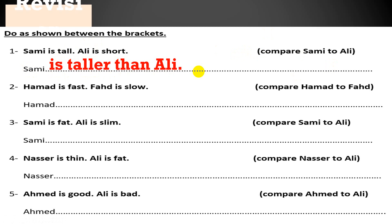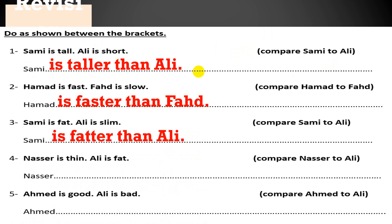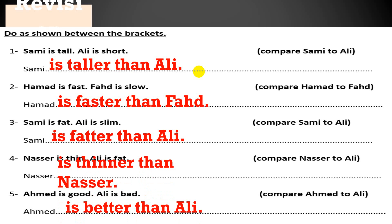Let's check: Hamad is fast, Fahid is slow — Hamad is faster than Fahid. Sammy is fat, Ali is slim — Sammy is fatter than Ali. Nasser is thin, Ali is fat — Nasser is thinner than Ali. Muhammad is good, Ali is bad — pay attention to this one. Can I say 'gooder'? For sure no. We have an irregular adjective here.